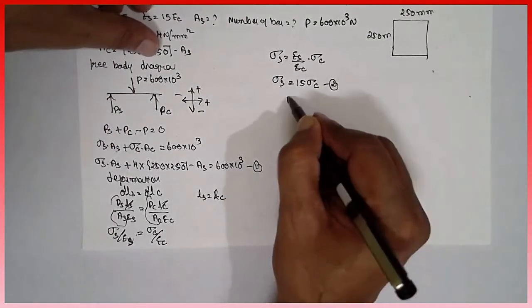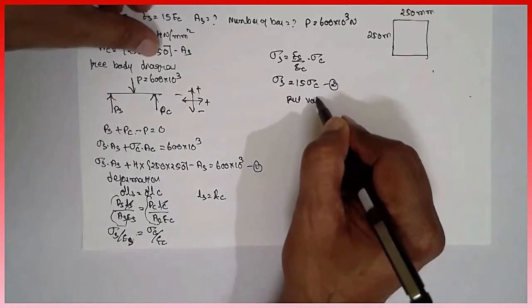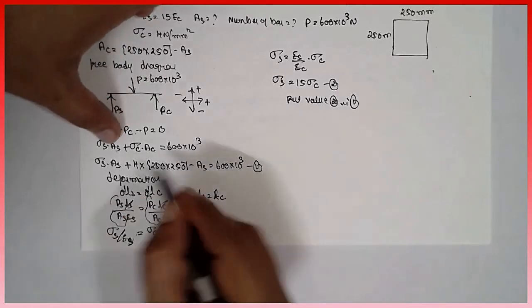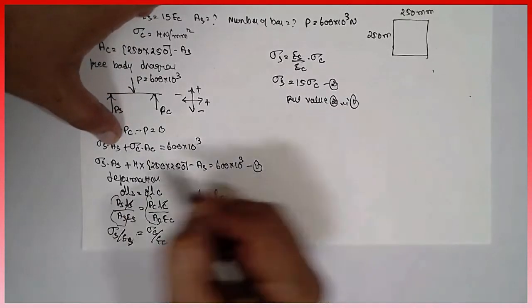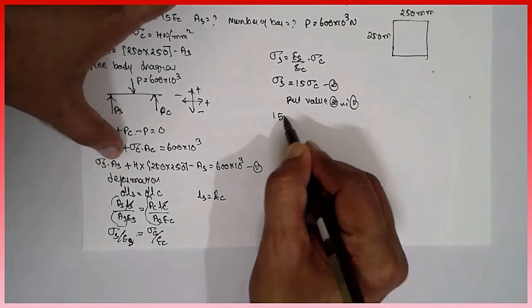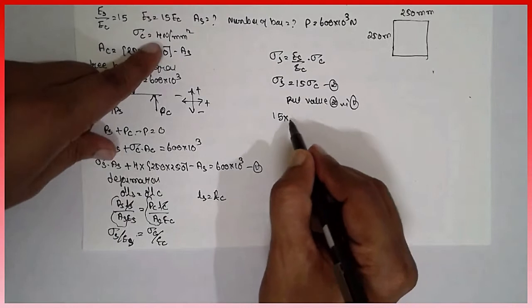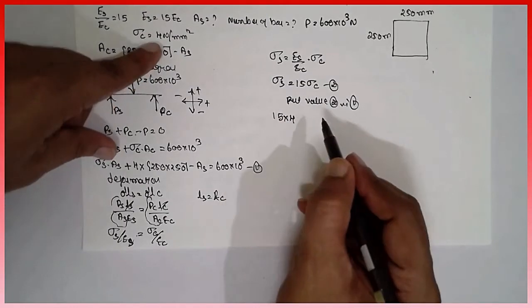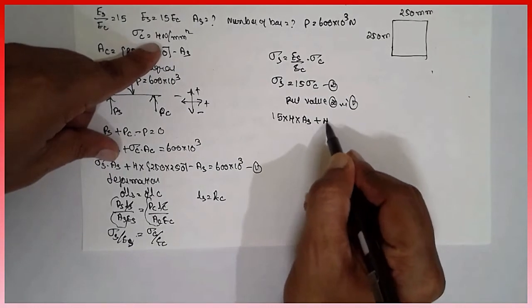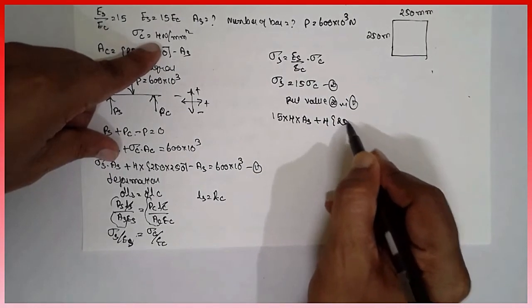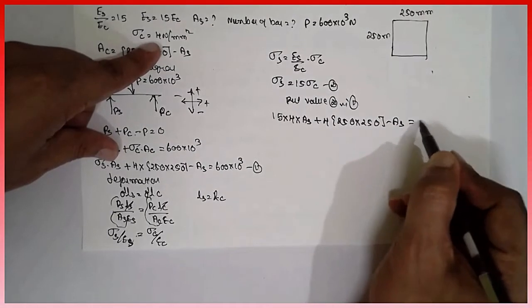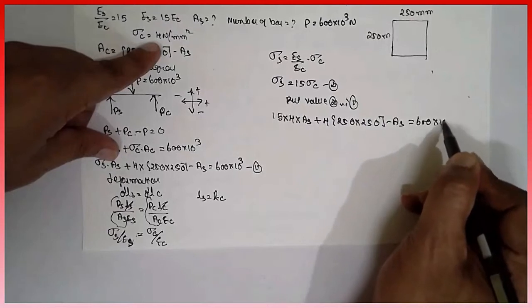Equation 2, put the value of 2 in 1, substitute the value in 1. In place of sigma s, 15. What is sigma c value? It is given 4. 4 into As plus 4, 250 into 250 minus As, is equal to 600 into 10 raise to 3.